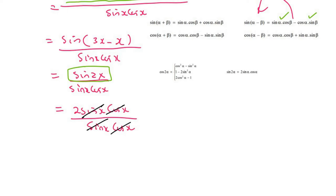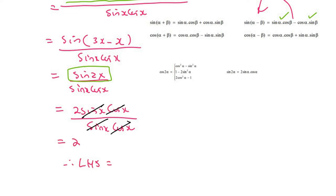That cancels, that cancels, that cancels, that cancels. So we're left with an answer of 2, and therefore LHS is equal to RHS.